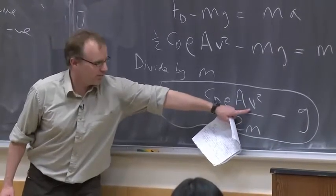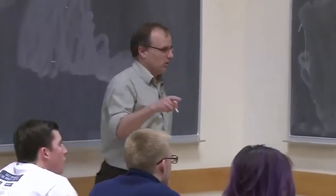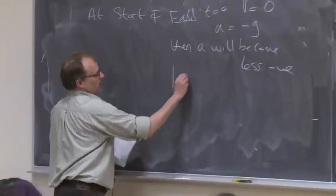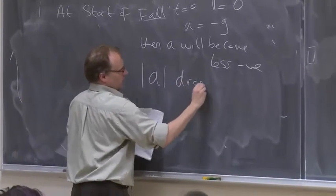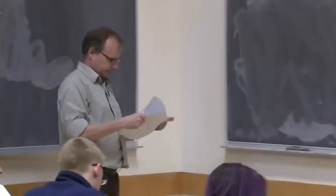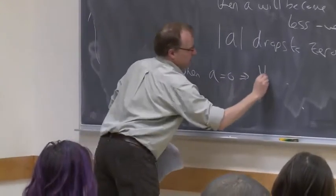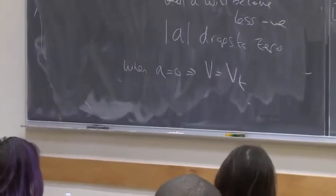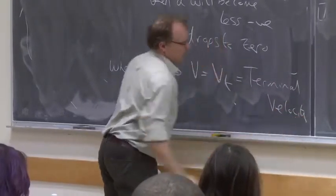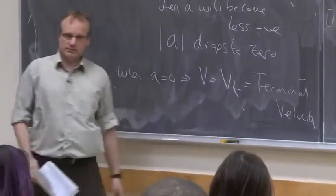This is always going to be positive because it's v squared. It's a negative velocity because you're going downwards, but v squared means that's a positive quantity. So this is just going to grow until these balance. So you could say that the magnitude of a will drop to 0. And when it equals 0, you have v is equal to vt, which we call the terminal velocity. That would be the fastest that something can fall at. It's the speed that would be its constant speed if something's falling.